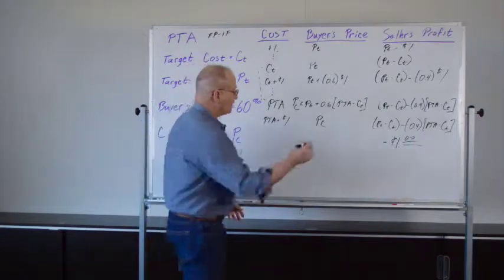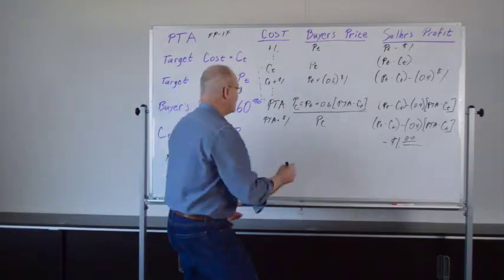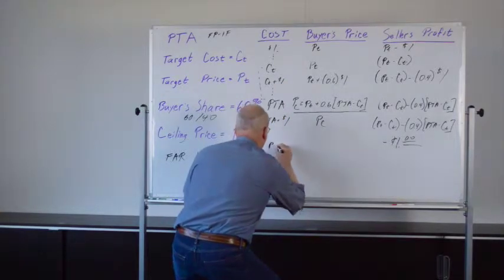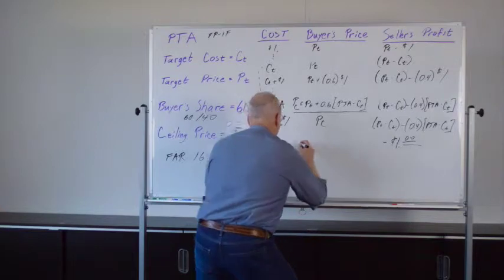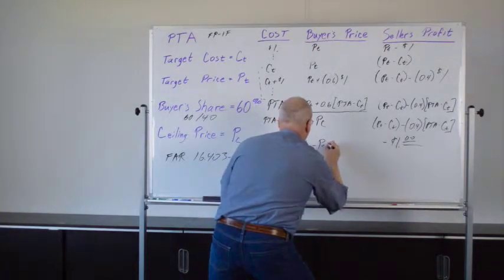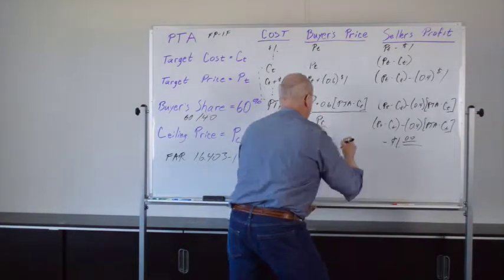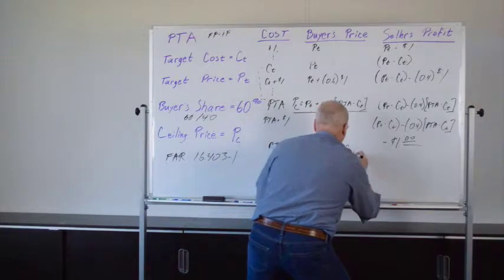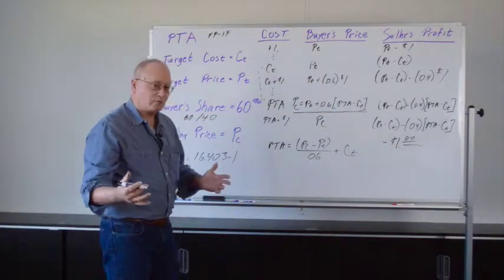Now one more thing. We're going to take this equation here and solve it for PTA. So PTA equals P sub C minus P sub T divided by the 0.6 plus the C sub T.